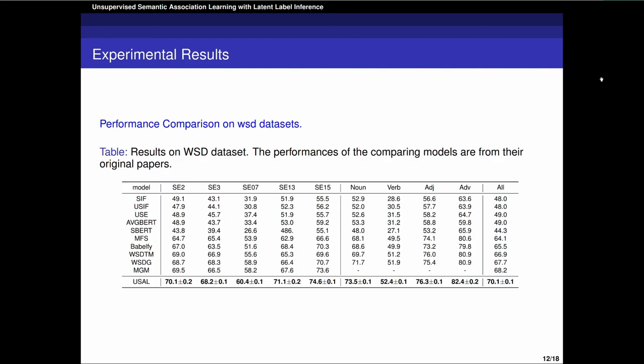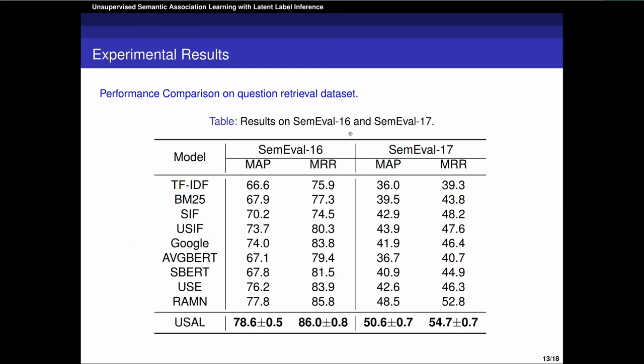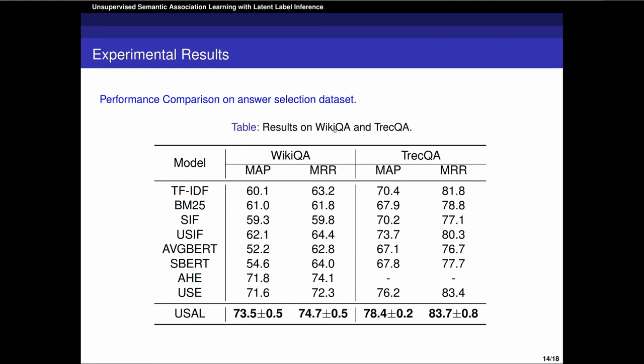We do experiments on three tasks and report the results. We report the main result of USAR on five runs along with its standard deviation on each dataset. Here is the result of Word Sense Disambiguation task. Here is the result of Question Retrieval task. And here is the result of Answer Selection task. We can find that in each task, our model achieves the state-of-the-art performance.